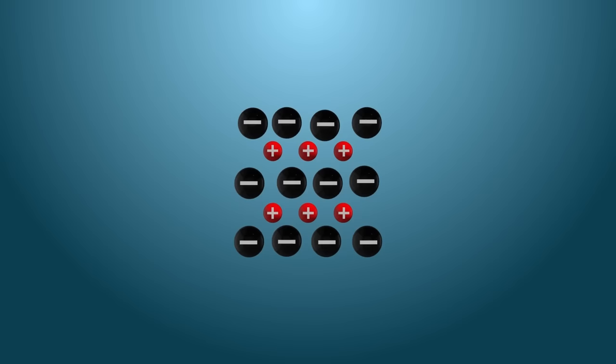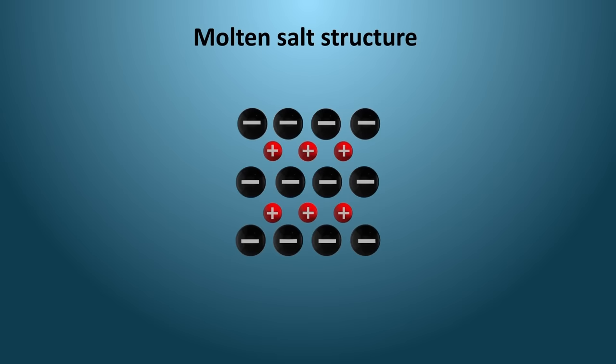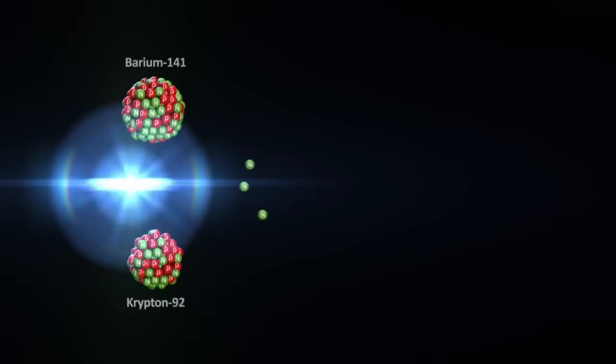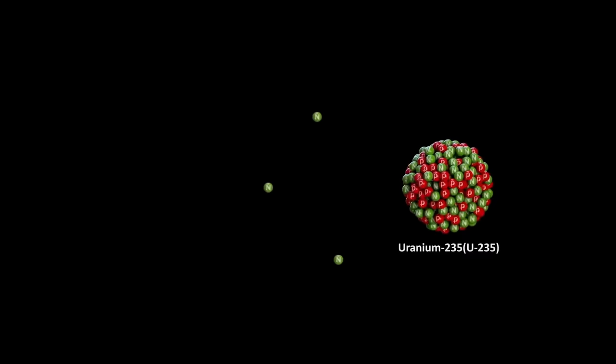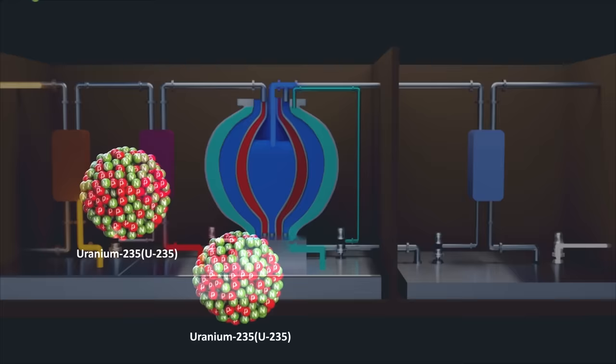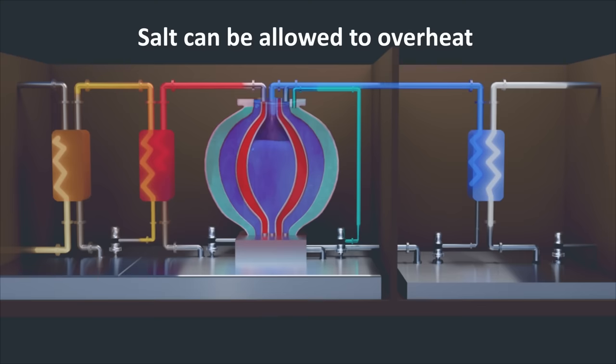Molten salt also happens to have a chemical property which makes it safer. When molten salt becomes too hot, it naturally expands. That is, the distance between its molecules increases. This reduces the nuclear chain reactions because the distance between the fissile atoms increases. So the likelihood of neutron nuclei collisions decreases and the chain reaction slows down all by itself, if the salt gets too hot. This is like a built-in thermodynamic safety valve. So in case of trouble, the salt can be just allowed to overheat and the chain reactions will be reduced by itself. This makes the idea of runaway overheating or meltdown virtually obsolete.